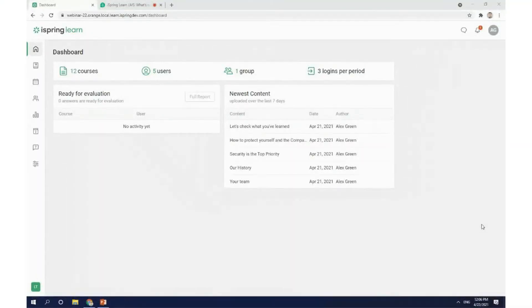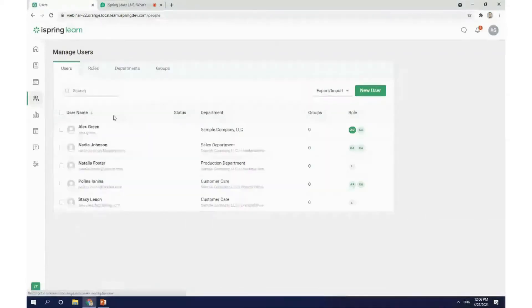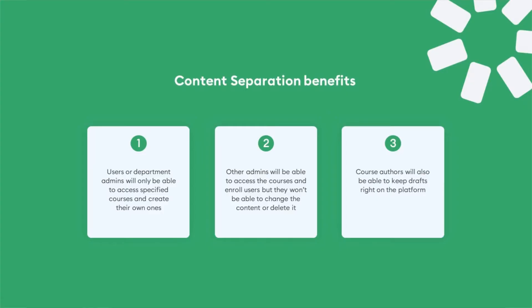Currently, all users registered on the platform with a role higher than a learner can see all of the content that has been uploaded to the account. With this new update, courses can be stored in different projects with different access restrictions. This kills several birds with one stone. First, different users or department admins will only be able to access specified courses and create their own. Second, it allows you to restrict editing so that other admins can access courses and enroll users, but won't be able to change the content or delete it. Third, course authors will be able to keep drafts right on the platform.